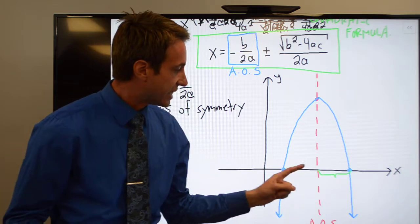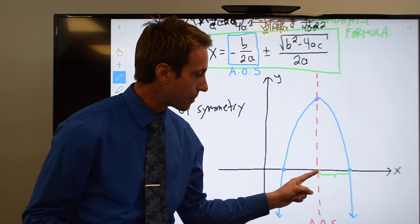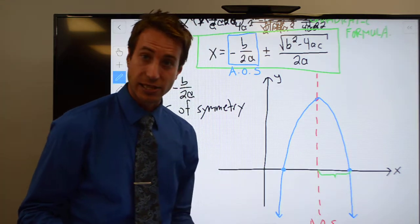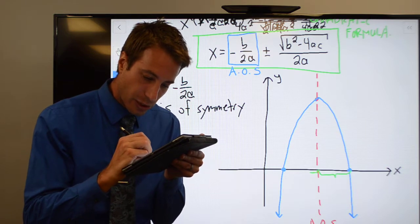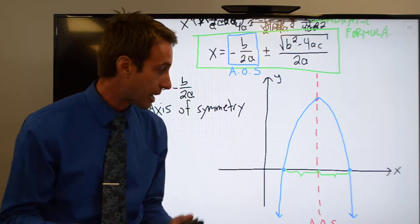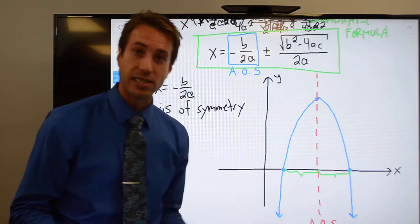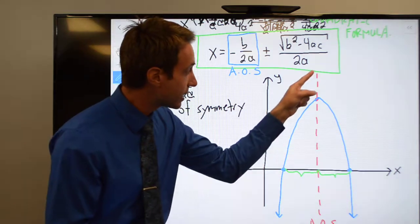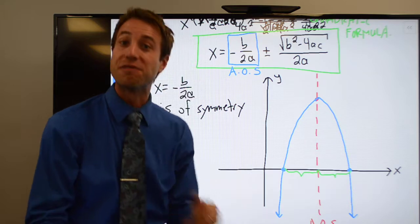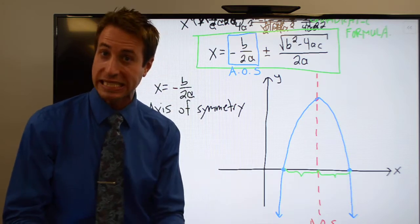which means the distance from the axis of symmetry to this x-intercept and the distance from the axis of symmetry to this x-intercept, these two distances have to be exactly the same, because it's an axis of symmetry that divides the parabola right down the middle.